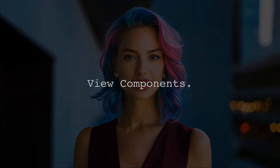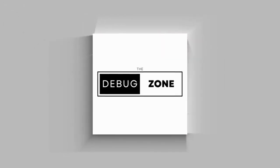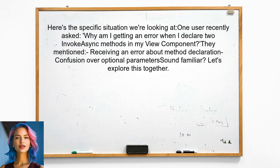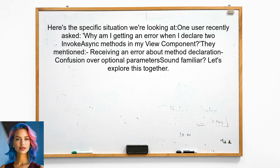Especially when it comes to method overloads. Here's the specific situation we're looking at. One user recently asked, 'Why am I getting an error when I declare two InvokeAsync methods in my view component?' They mentioned that they receive an error stating that the component must have exactly one public method named InvokeAsync or Invoke. Sound familiar? Let's explore this together.